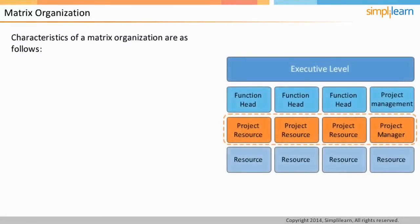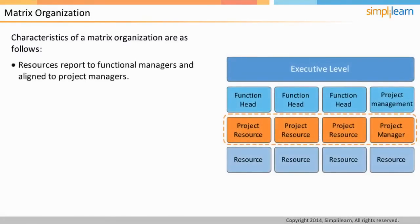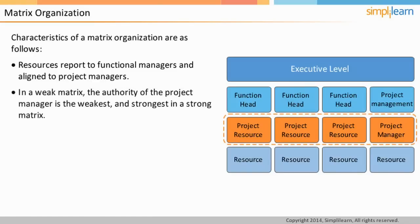In a matrix organization, the resources report to the functional managers and are managed by the project managers as well. There might even be a function that represents all the project managers in the organization, which provides project management expertise. The matrix structure has three variants: weak, balanced, and strong. In a weak matrix, the authority of the project manager is the weakest and strongest in a strong matrix structure. The titles given to project managers in functional or weak matrix organizations are project expediter or project coordinator.